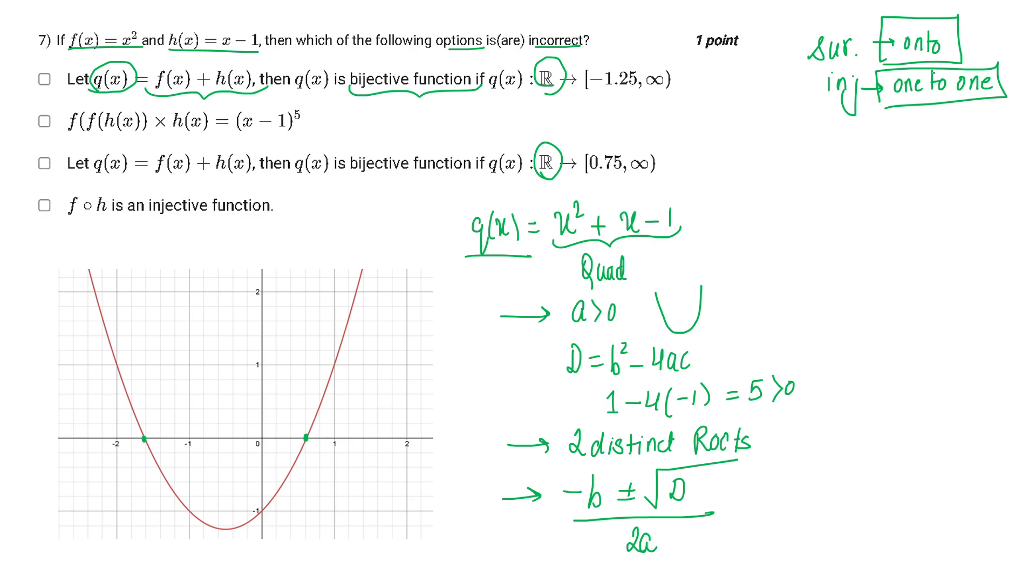Since this is a quadratic equation, it is a function. Therefore you have to test the vertical line test. Draw a vertical line anywhere - the graph will be intersected at only one point. Therefore the vertical line test is passed.